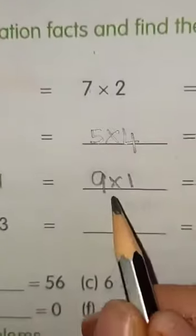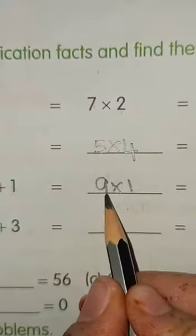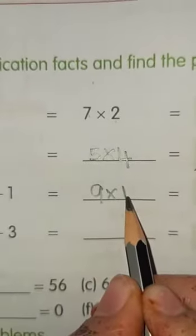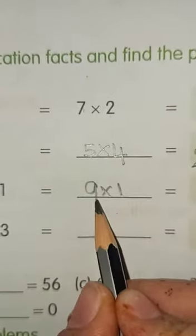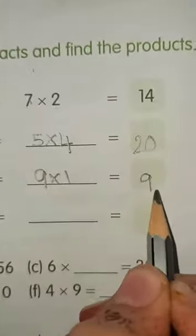Children, remember, when you multiply any number with 1, you will get that number only. So, 9 ones are 9.